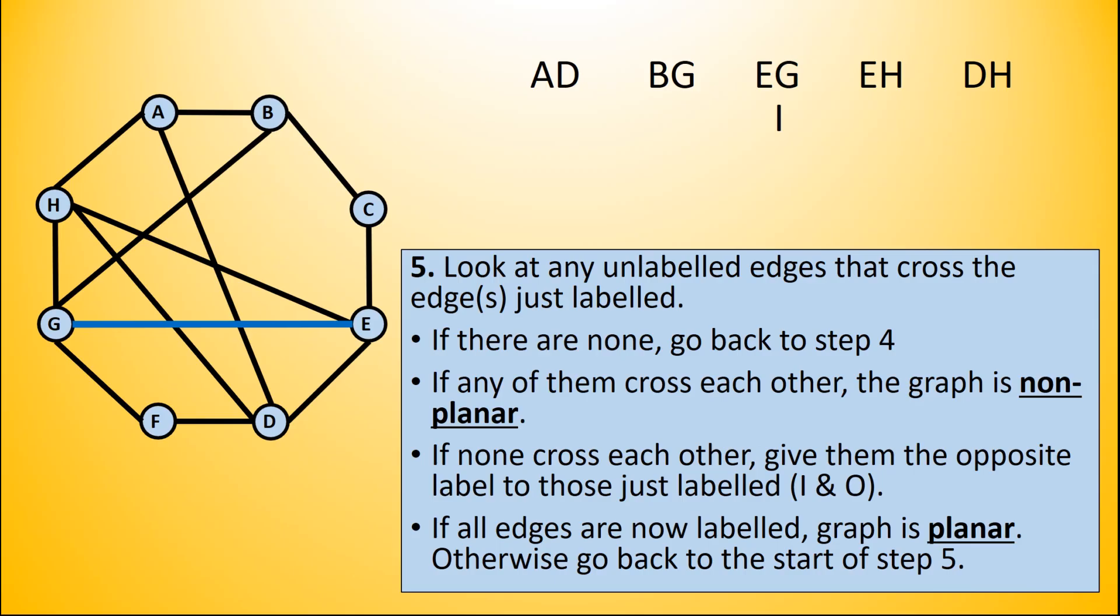It's probably helpful if we bring up step 5 of the algorithm. So we look at any unlabeled edges that cross the edges just labeled - that is, any edges crossing EG. We have two in this case. Those two edges do not cross each other, so we're going to give them the opposite label to EG - that is, we're going to give them both an O. After that, if all edges are now labeled, the graph is planar. Well, it's not, so we go back to the start of step 5 again.